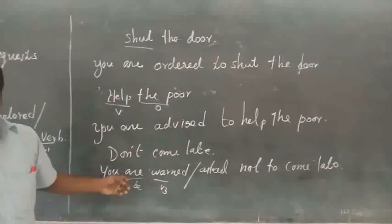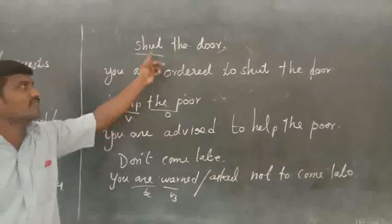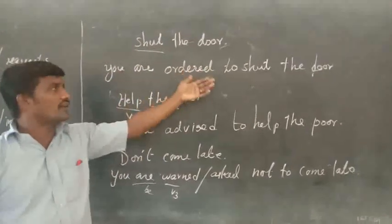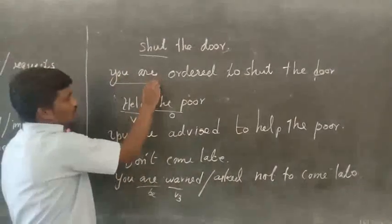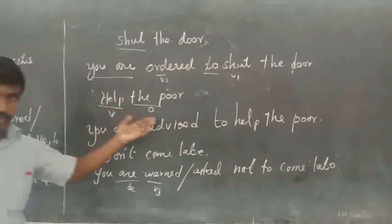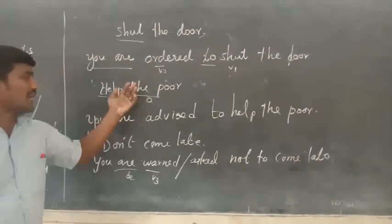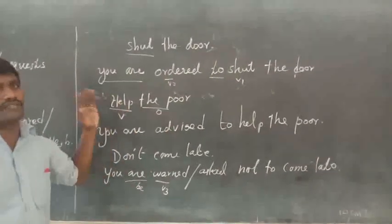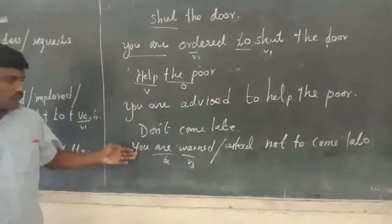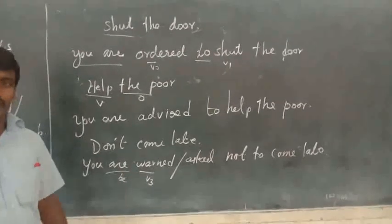Let me recap. 'Shut the door' — this is an imperative sentence. Change to passive voice: 'You are ordered to shut the door.' Remember: 'you are' comes first, then the past participle verb, then 'to,' then the verb-one form, and then the object at the end. 'Help the poor' becomes 'You are advised to help the poor.' 'Don't come late' becomes 'You are warned or asked not to come late.' Are you clear, children?